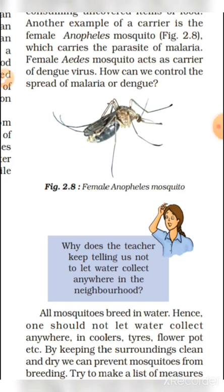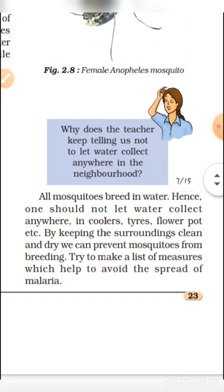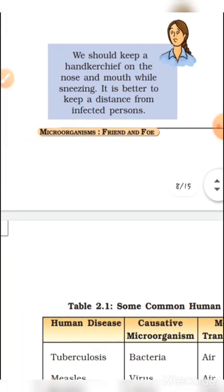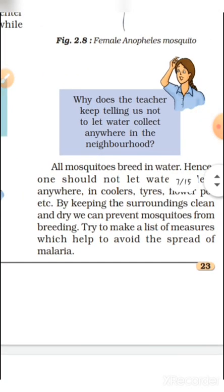Why do teachers tell us not to let water collect nearby? Because all mosquitoes breed in water — we should not let water remain stagnant anywhere. Do not let water collect in coolers, tyres, flower vases etc. By keeping our surroundings clean and dry, we can prevent mosquitoes from breeding and thus avoid many diseases. We should regularly clean our coolers.